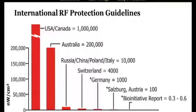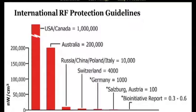You are looking at international RF protection guidelines for general population exposure. The US and Canadian guideline is at least 100 times higher than what you get from countries like Russia, China, Poland, Italy, and Switzerland, and 10,000 times higher than guidelines in Austria, and up to 3.5 million times higher than what independent scientists recommend. So the question is: why are other countries adopting stronger guidelines, and why do the US and Canada have the weakest RF exposure standards in the whole world?